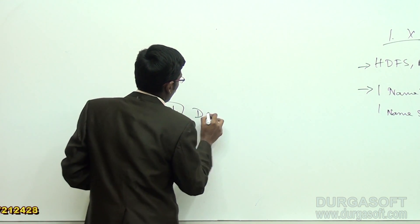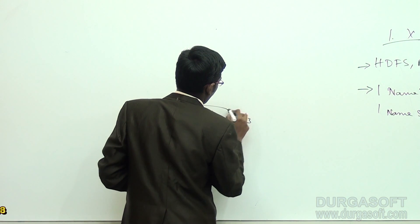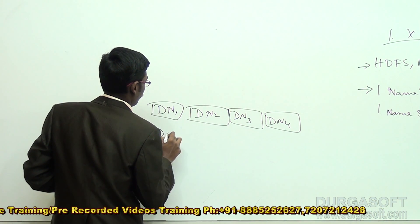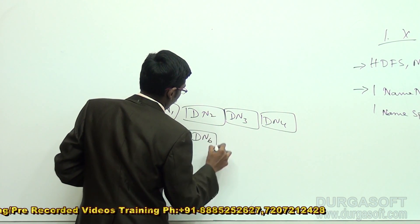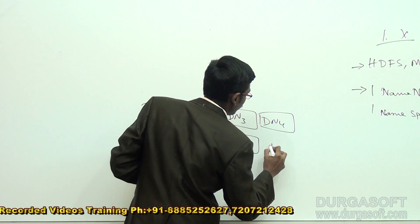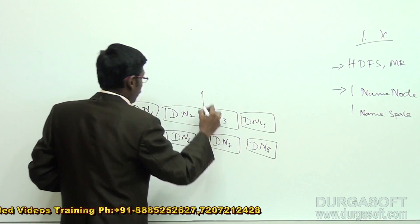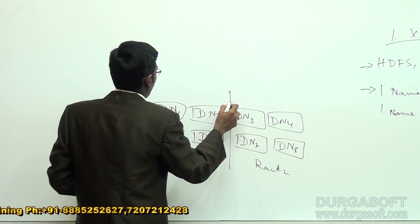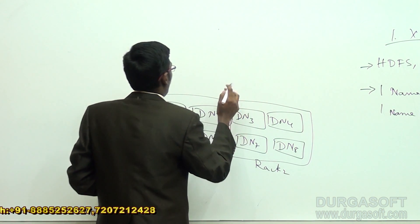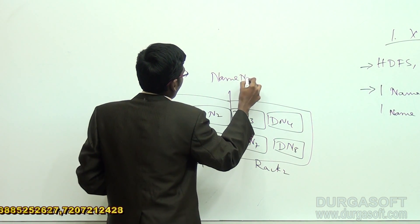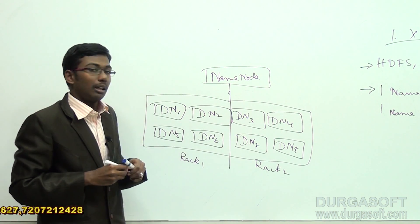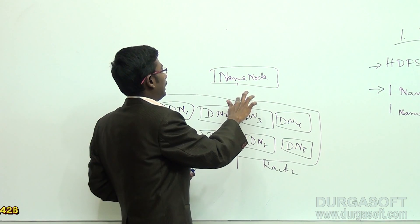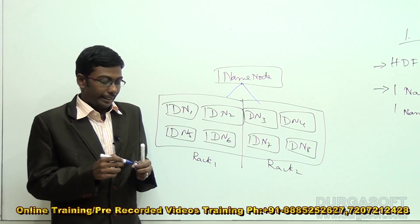Let's consider 8 data nodes arranged in 2 racks. The name node has the complete responsibility to work with these two racks. Both racks have equal responsibility to share the complete data from any one of the locations.